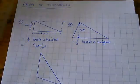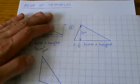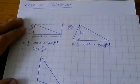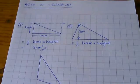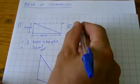If you tried to measure that distance or that distance, those would not be correct heights of the triangle. The height must be measured straight up from the base.